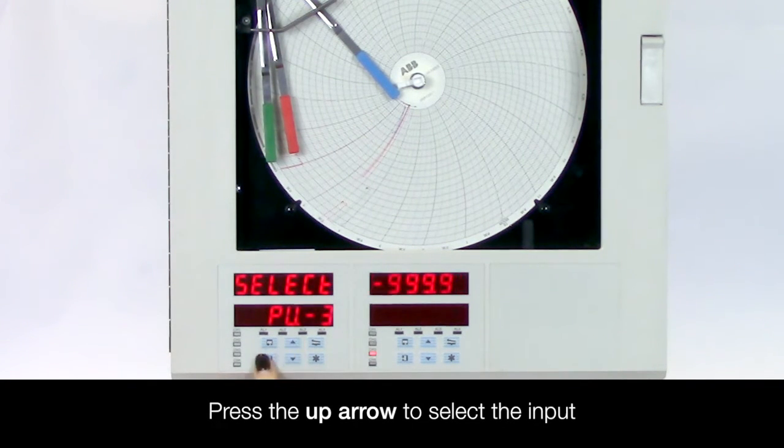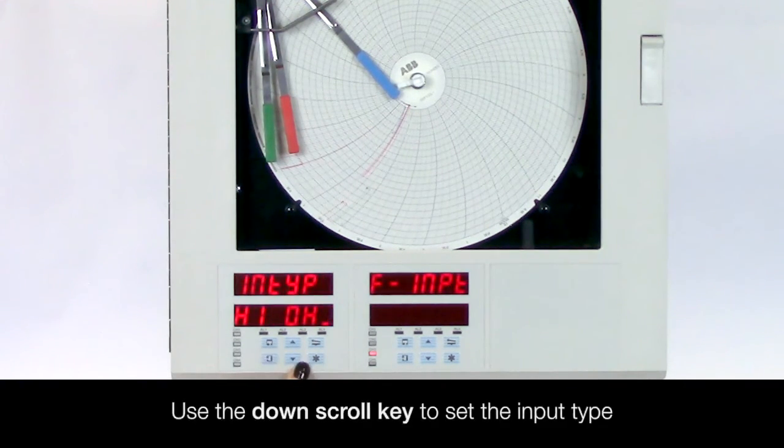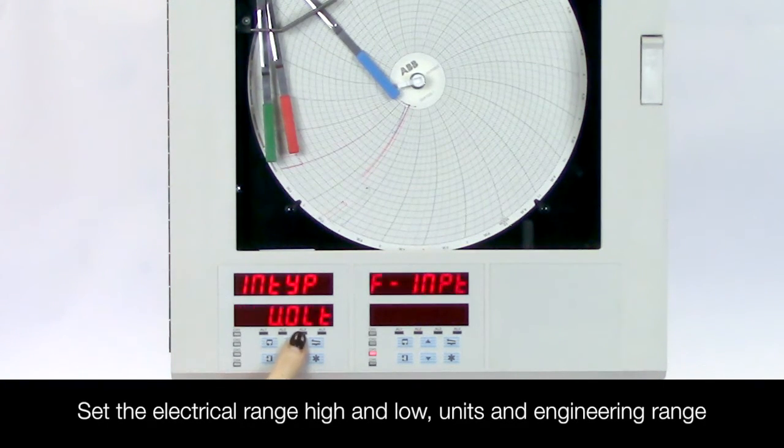Next press the up arrow to select the input you wish to configure and then the down scroll key to set up the input type. You would then set up the electrical range high and low units and engineering range.